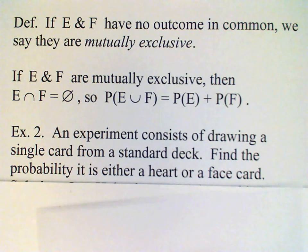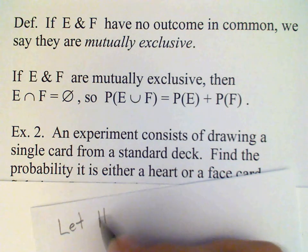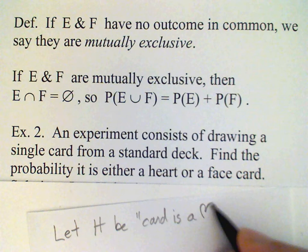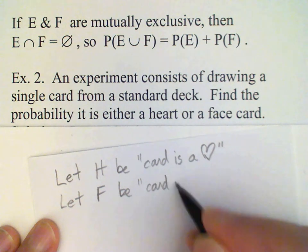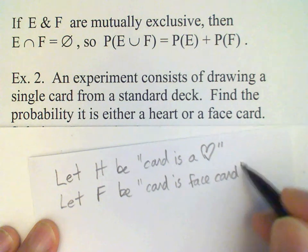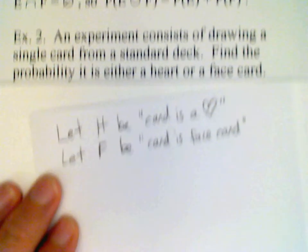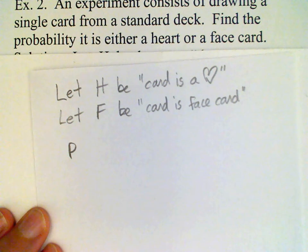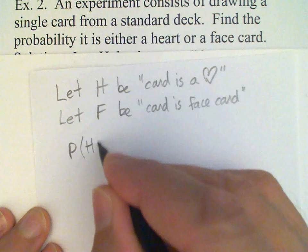So the first thing I'm going to do is write a couple of LET statements. Let H be the event that the card is a heart, and we'll let F be the event the card is a face card. So what we are interested in is the probability of their union. The word OR indicates that we need to find the union here, so the probability of H union F.